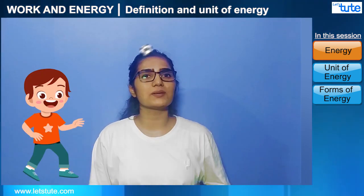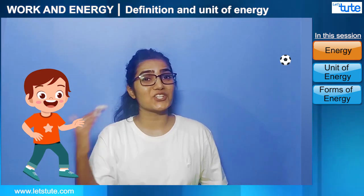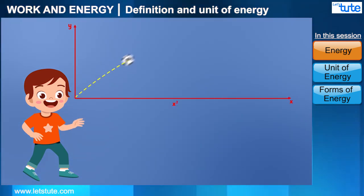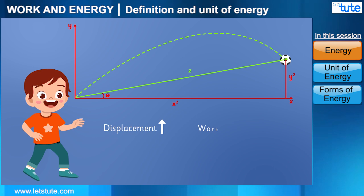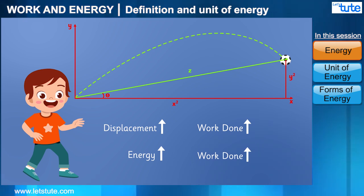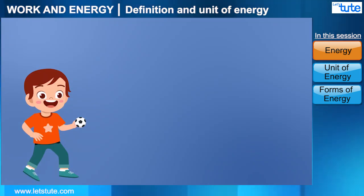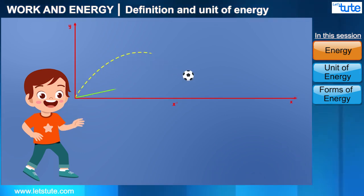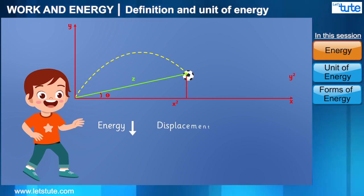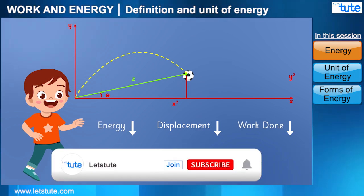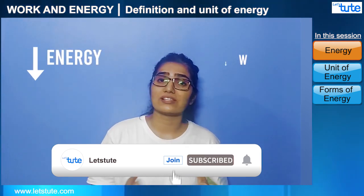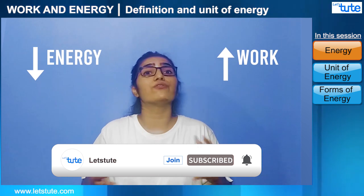To understand how work done and energy are related, consider a baller throwing a ball with a lot of energy — the displacement of the ball is very high, so the work done is also high. When the baller applies very less energy, the displacement is less and the work done is also less. So work and energy are interrelated: less energy means less work, more energy means more work.